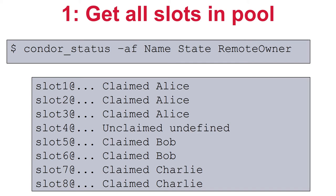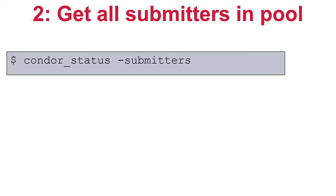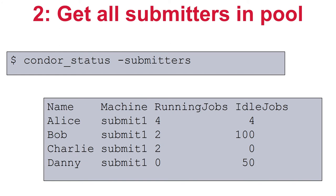The negotiator looks at the name, state, and remote owner attribute of all slots and builds a table noting the percentage each submitter has claimed, as well as any slots currently unclaimed. Step two is to get all the submitters, done in the shell with condor_status -submitters. This displays one ad per active submitter in the pool and their aggregate number of running, idle, and held jobs. The negotiator then discards submitters with no idle jobs, as they need no new matches for this cycle.